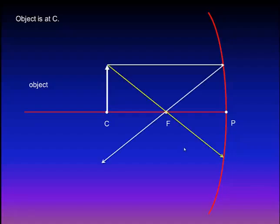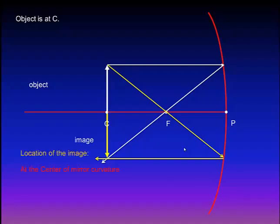The second ray will pass through the focus and will be reflected parallel to the principal axis. The intersection point of the two reflected light rays will be the location of the image. As you can see, the image is formed at the center also, and the image is real, inverted, and equal to the object.